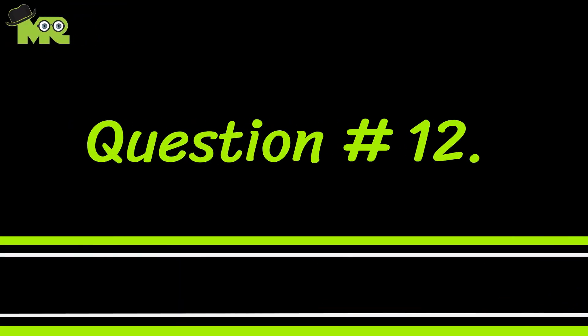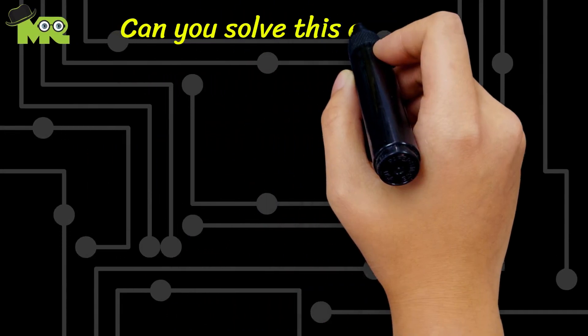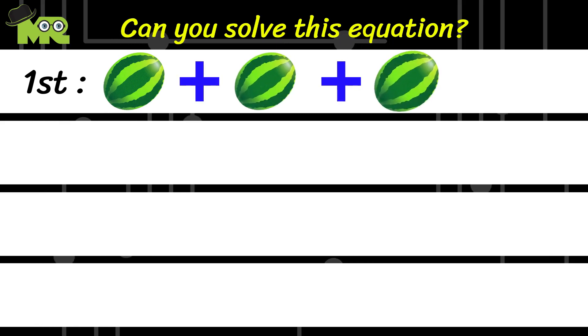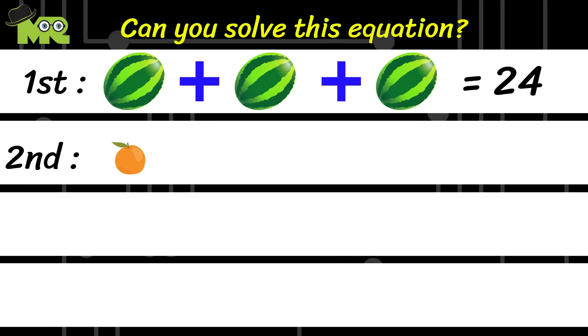Let's go to question 12. Can you find the answer for this fourth equation? The first equation is a watermelon plus a watermelon plus a watermelon is equal to 24. And the second equation is an orange plus a watermelon is equal to 12.